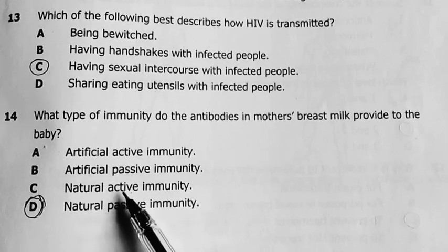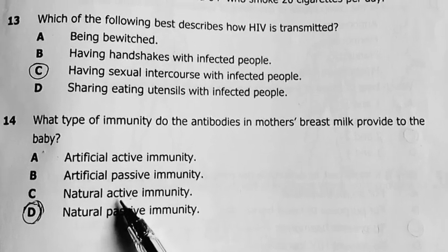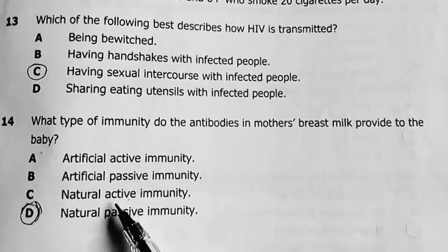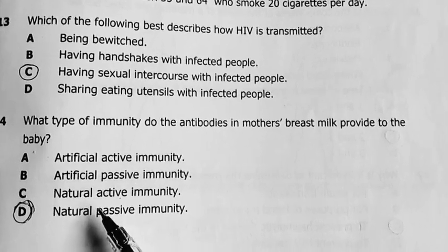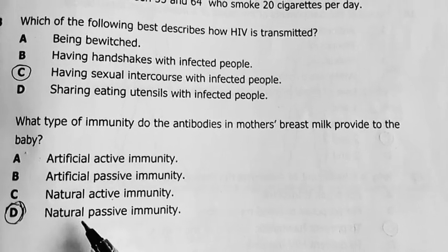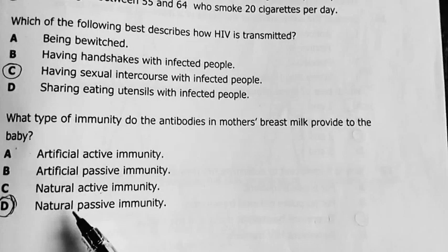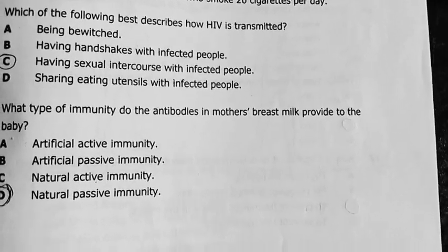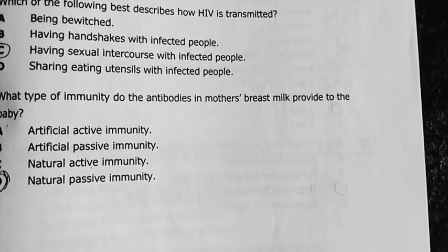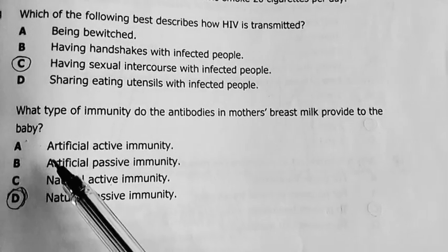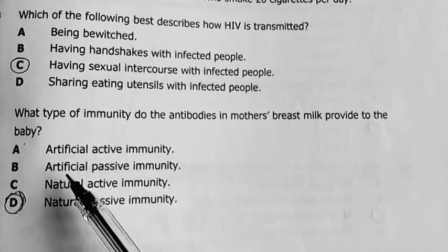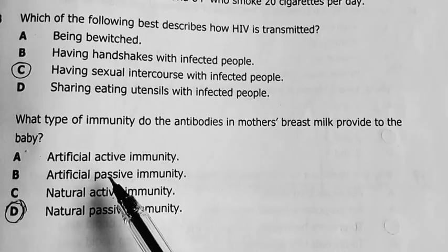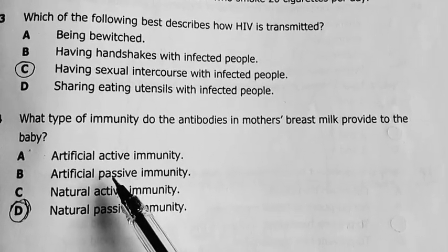If you say natural active, then it means it comes about naturally and the baby is involved in developing it. For example, as the baby crawls around, touches the floor, maybe touches the mouth, they tend to encounter a lot of microbes, bacteria that may not be so harmful, but will still cause the body to develop its immunity. If you say artificial passive, it means it's man-made and then the individual is not involved in developing it.